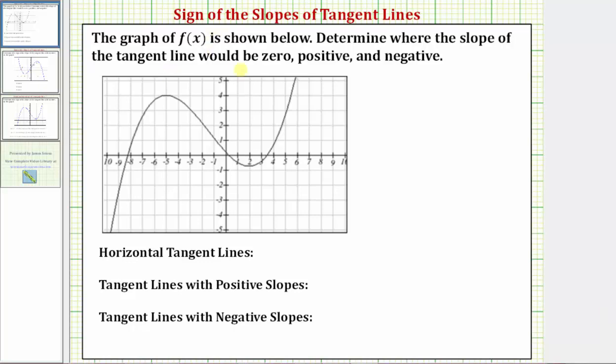The graph of f of x is shown below. Determine where the slope of the tangent line would be zero, positive, and negative.